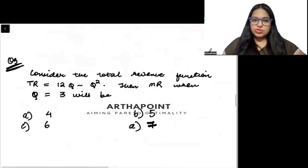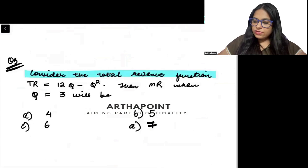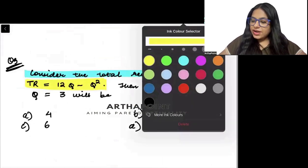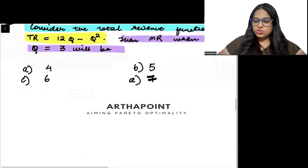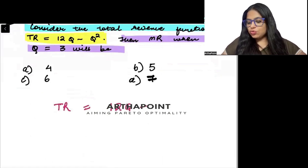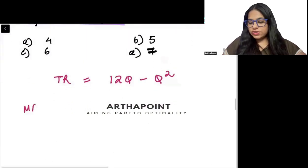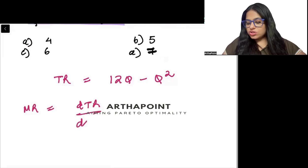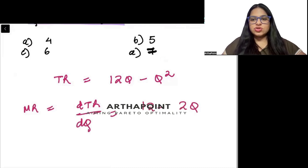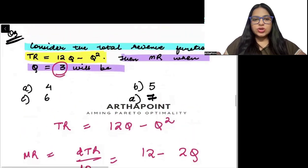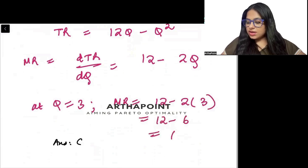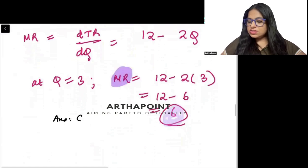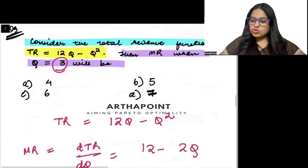Come to the next question. It says, consider total revenue function. You are given the TR function. Find the marginal revenue when q is equal to 3. Very simple question. So total revenue function is 12q minus q square. So what will be marginal revenue beta? How total revenue changes as output changes. Differentiate, you will get 12 minus 2q. You want to evaluate this when q is 3. So when q is 3, marginal revenue will become 12 minus 2 into 3, 12 minus 6, that means 6. So the marginal revenue will be 6 beta. So the correct answer to this question is C.